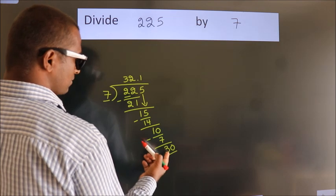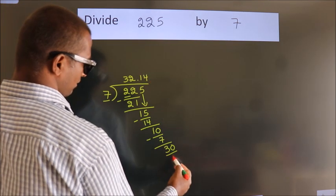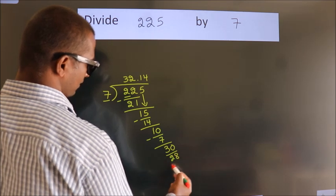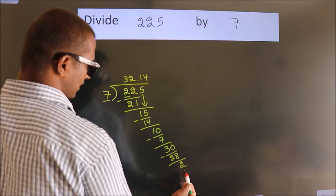A number close to 30 in the 7 table is 7 fours 28. Now we subtract. We get 2. And the division continues.